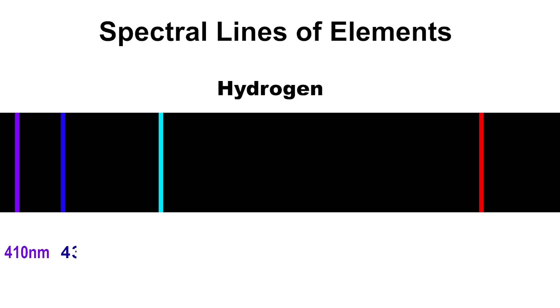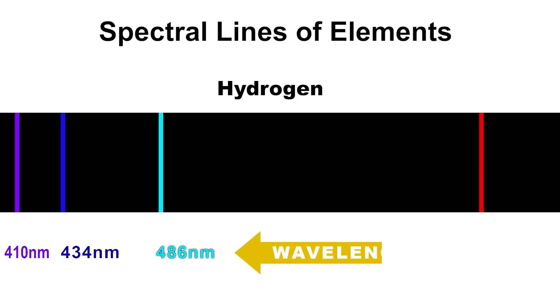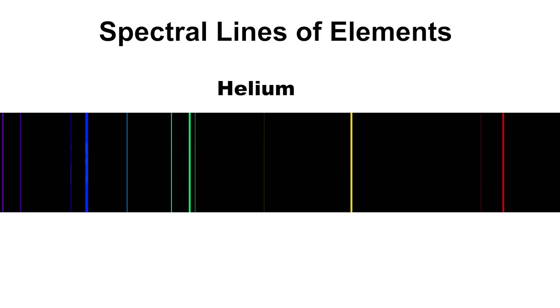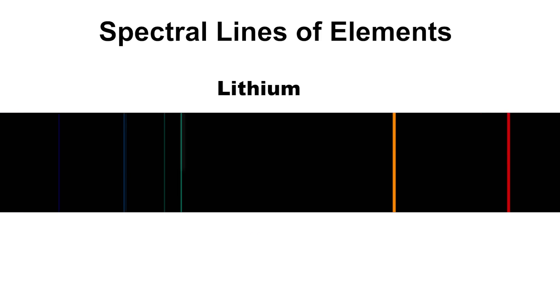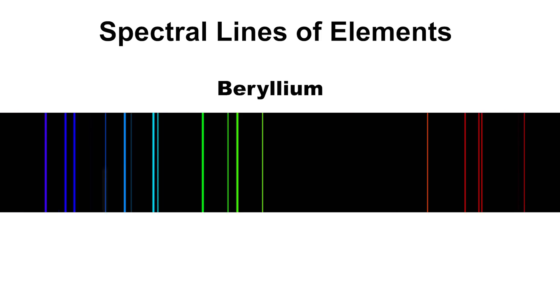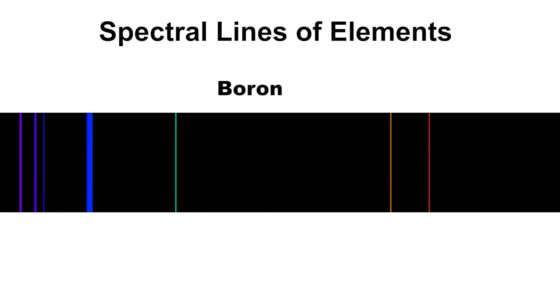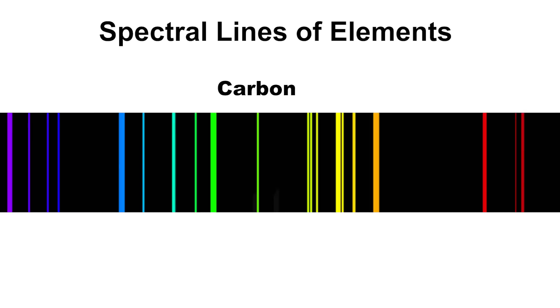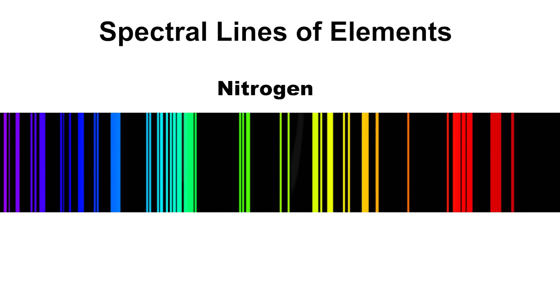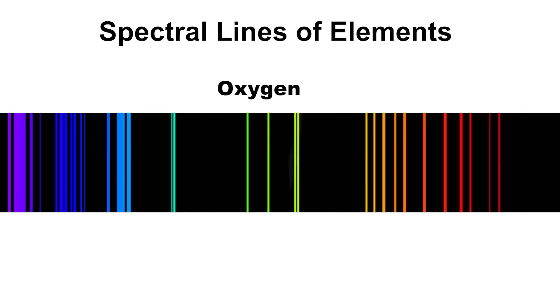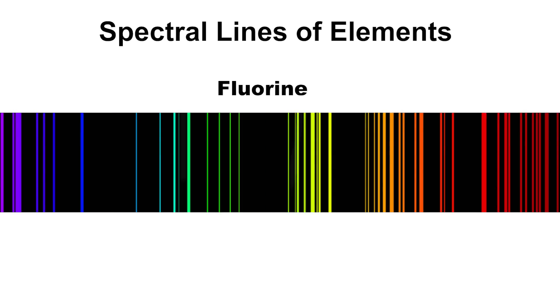Each color represents a specific wavelength of light. Every element has their spectral line signature. If you're curious why these lines happen, stick around to the end — the answer sparked a new branch of science.